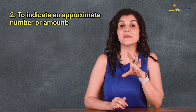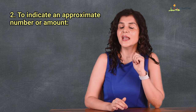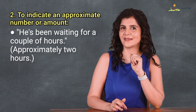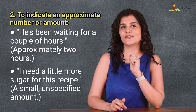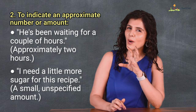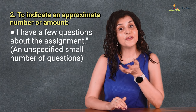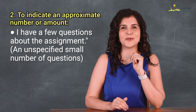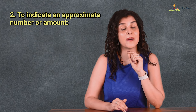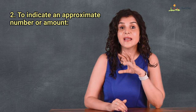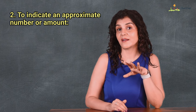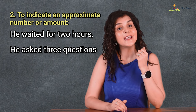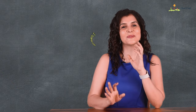A and an are also used to indicate an approximate number or amount. He's been waiting for a couple of hours — approximately two hours. I need a little more sugar for this recipe — a small unspecified amount. I have a few questions about the assignment — an unspecified small number. If we had a specific number greater than one, we would not require an article: he waited for two hours; he asked three questions.